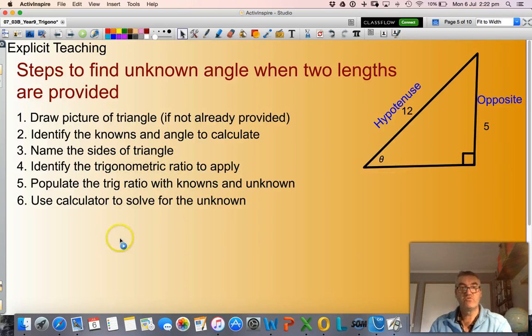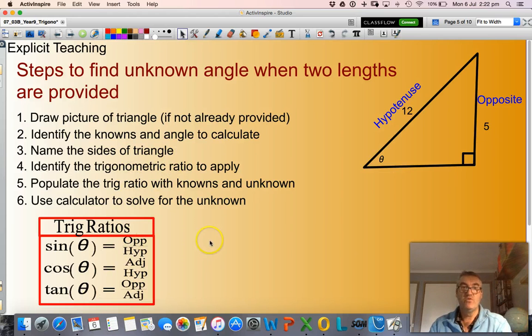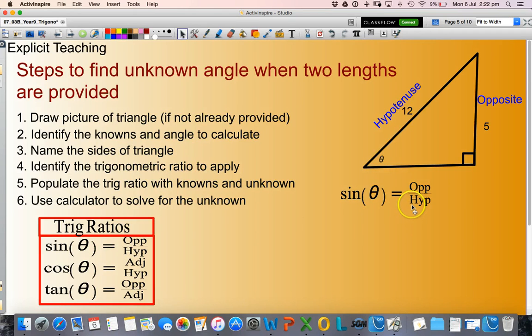Now, which trig ratio do I use? Well, which one has both opposite and hypotenuse? There you go, it's the sine theta. So I will write down sine theta equals opposite divided by hypotenuse. Then all I need to do is populate with the values. So the sine of my angle equals 5 divided by 12.